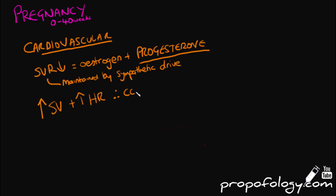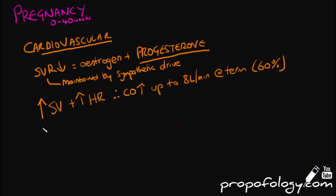You'll also see an increased stroke volume and heart rate in pregnant ladies. Cardiac output increases to up to about 50–60% at term, which is about 8 litres a minute. There's an increase in the mass of the left ventricle, and ECGs will show left axis deviation and sometimes T-wave changes like a flatter or inverted shape.